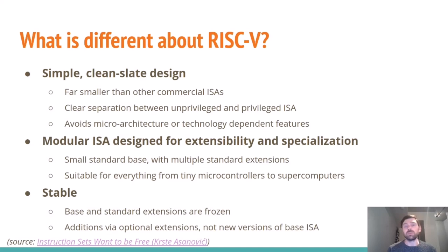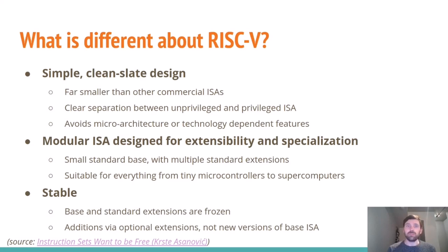RISC-V is a simple, clean-slate design built upon many decades of knowledge from the Berkeley team. It's far smaller than commercial instruction sets and has a clear separation between unprivileged and privileged modes. It avoids baking in microarchitecture or technology-dependent features. RISC-V is also modular — extensible and specializable for different use cases — with a small standard base and multiple standard extensions, making it suitable for everything from a tiny microcontroller to a supercomputer. The base and standard extensions are frozen, so they'll always be supported, and additions come via optional extensions like the vector processing and hypervisor extensions currently in development.